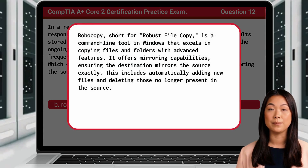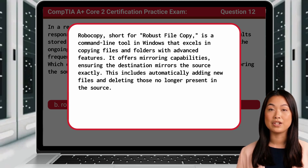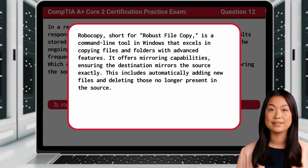Robocopy, short for robust file copy, is a command line tool in Windows that excels in copying files and folders with advanced features. It offers mirroring capabilities, ensuring the destination mirrors the source exactly. This includes automatically adding new files and deleting those no longer present in the source.